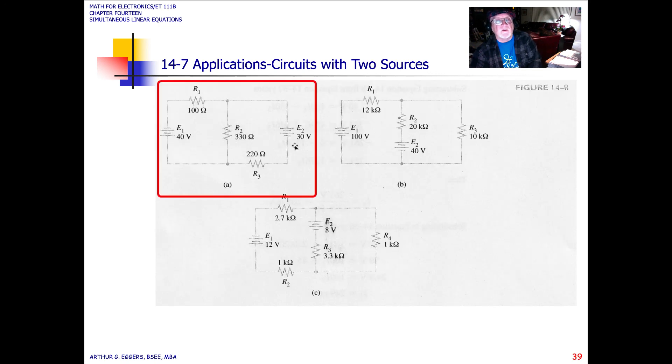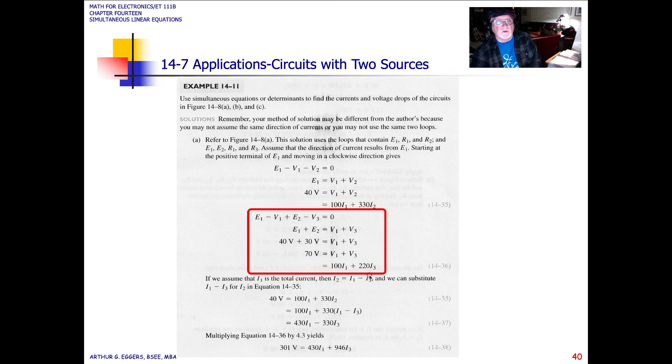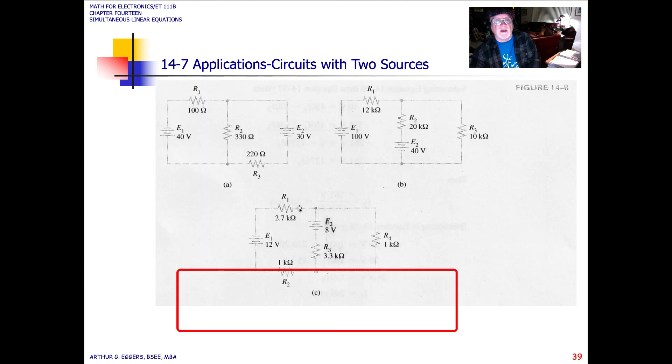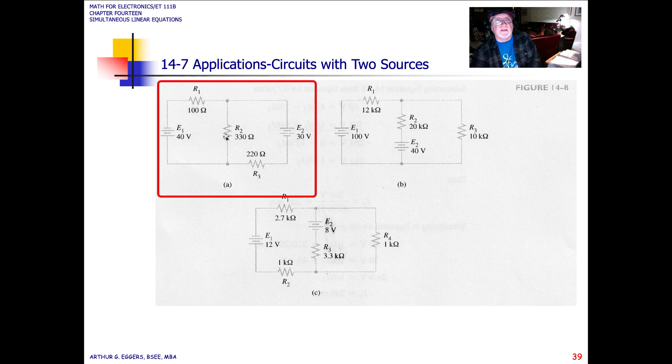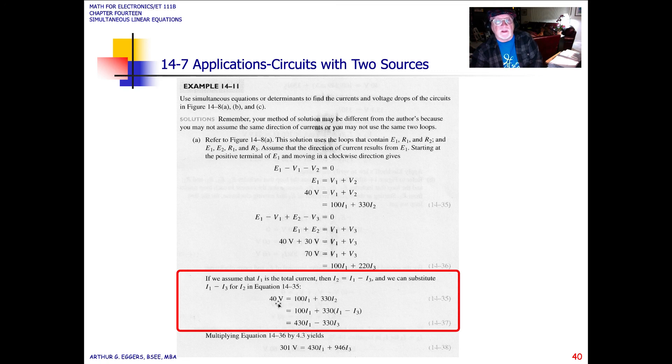So if we look at, we had resistor 100, resistor 220. So there's our resistor 100, and 220. If we assume that the current I1 is the total current, then I2 must equal the difference in I1 minus I3. So we're looking at the split that occurs about this middle member to reduce I1, I2, and I3.